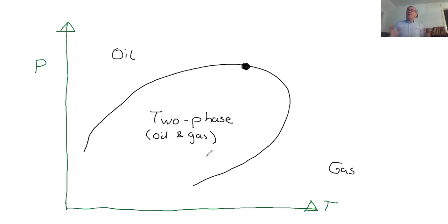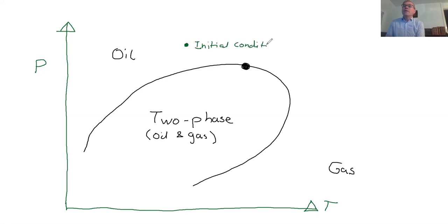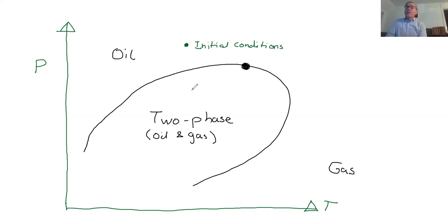Now imagine we have an oil field. The green spot represents the initial conditions — the reservoir is initially at high pressure and higher temperature than we'd see at the surface. I can also indicate surface conditions with a different color. The surface is at lower pressure and lower temperature, and in fact it's generally in the two-phase region.